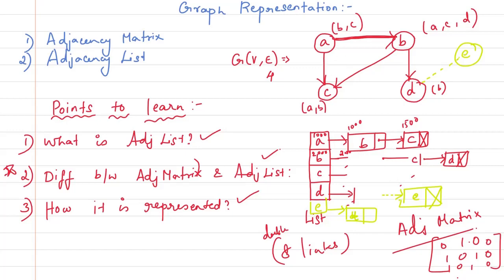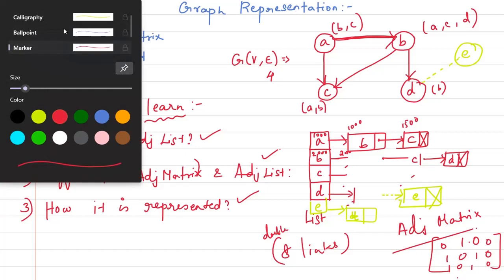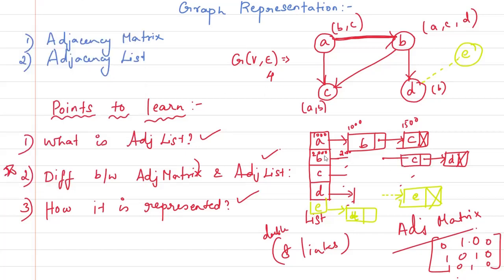In this directed graph example: A connects to B and C; B connects to C and D; C has no outgoing connections so it is null; D connects to E; E has no outgoing connection so it is also null. The total number of links here is 5 — matching the 5 directed edges in the graph. Memory allocation is done for each vertex, storing the starting address of its adjacent nodes.